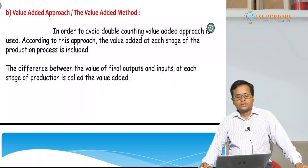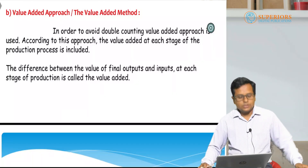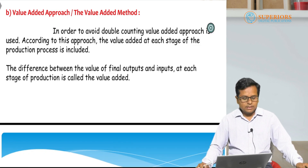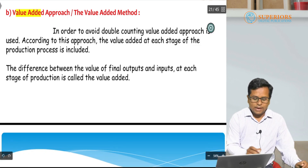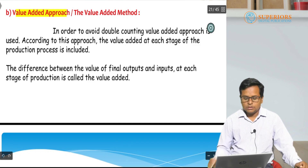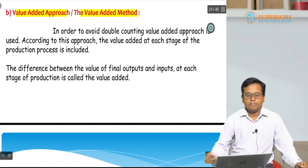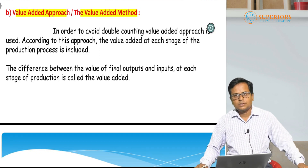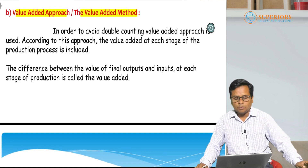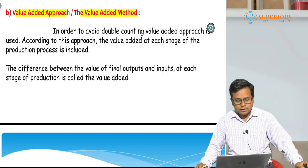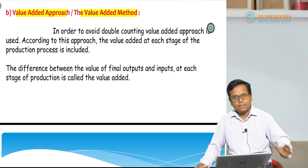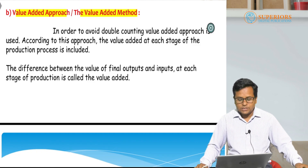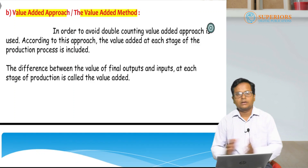The second approach suggested by economists in the output method is the value-added approach. This is also known as the value-added method, and it is the approach suggested by economists to avoid double counting. The accurate measurement of national income is very important, so for accurate measurement we should avoid double counting.